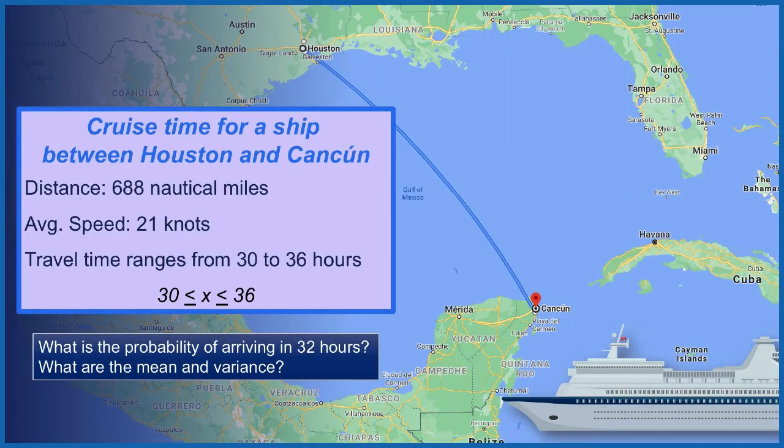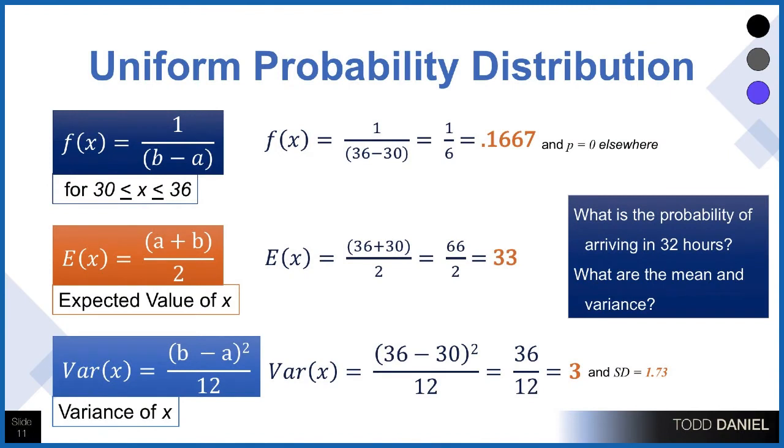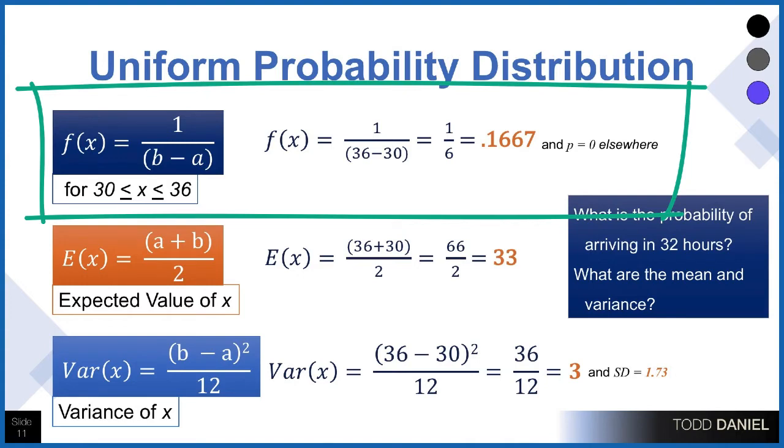What is the probability, therefore, of arriving in 32 hours? In order to answer that question, we need to know how many intervals there are. And I put these into one-hour intervals, so there are six intervals. Therefore, the probability distribution would be, if you're answering the question, what's the probability we would arrive in 32 hours? It's going to be the same. The function is 1 over b minus a, which is the largest minus the smallest value, which is 1 over 6, because there are six intervals. Therefore, the probability of 32 hours would be 1/6. The probability of 34 would be 1/6. Any interval within that timeframe would be exactly the same. It's 1/6.